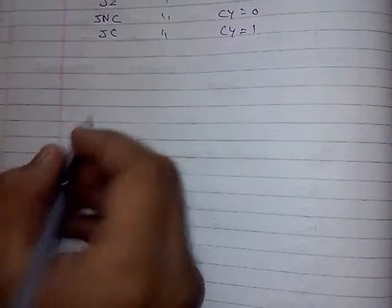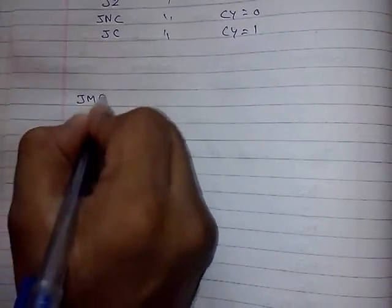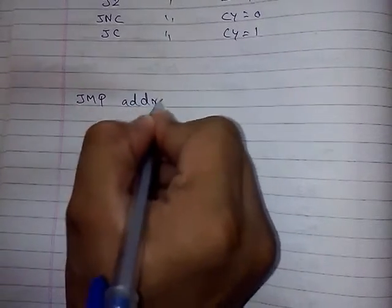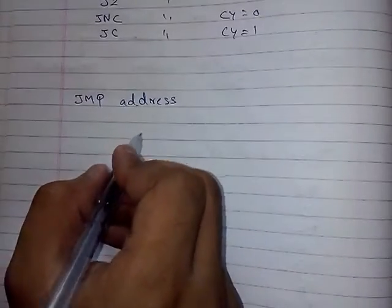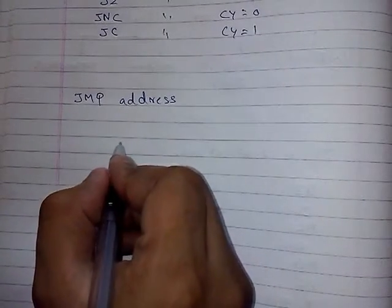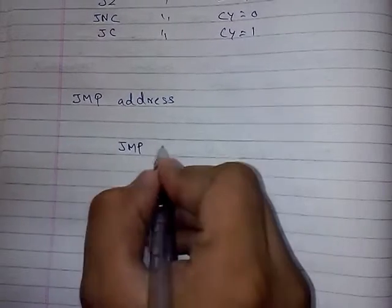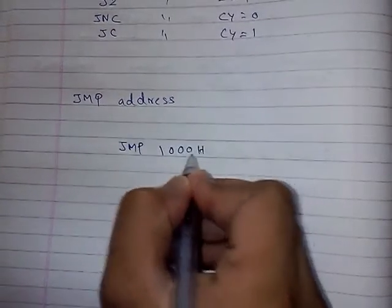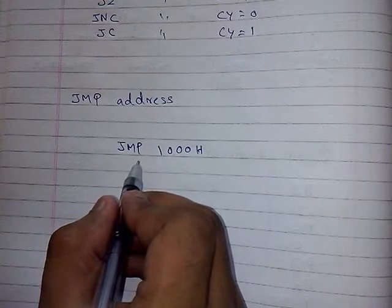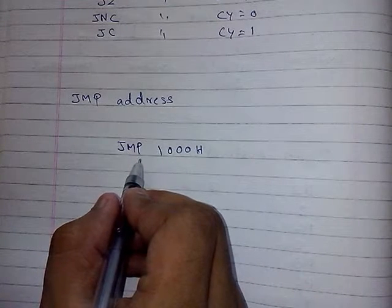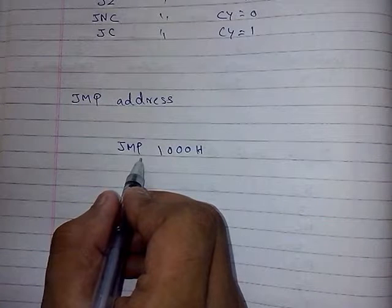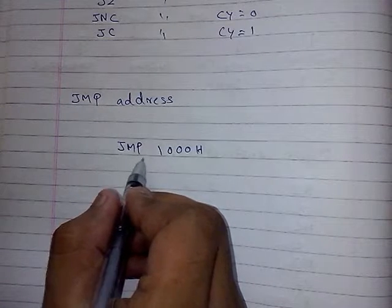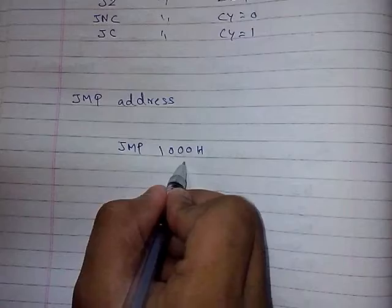The next type of instruction is unconditional jump. In this, we have only one instruction, that is JMP followed by an address. This does not check any condition. If we write JMP with an address like 1000H, then it will simply jump to that memory location without checking any condition.